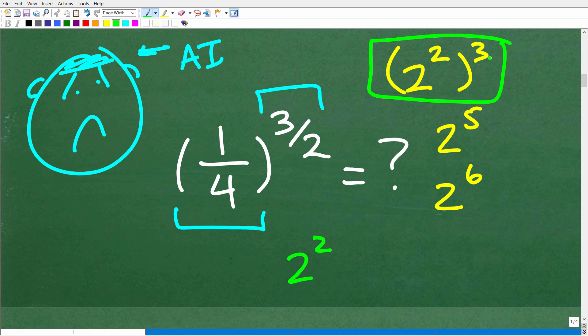So 2 squared cubed means what? Well, we're going to take 2 squared and we're going to multiply 2 squared by itself three times. So that's going to be 2 squared times 2 squared times 2 squared. So this is going to be what? Well, this is 2 times 2, 2 times 2, and another 2 times 2. So we have 2 to the sixth.